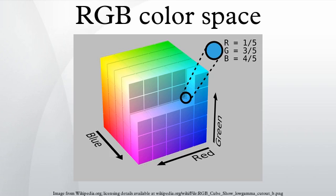The complete specification of an RGB color space also requires a white point chromaticity and a gamma correction curve. As of 2007, sRGB is by far the most commonly used RGB color space. RGB is an abbreviation for red, green, and blue.